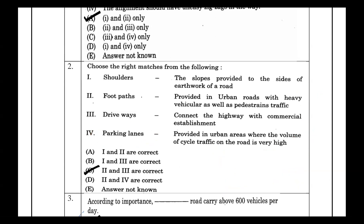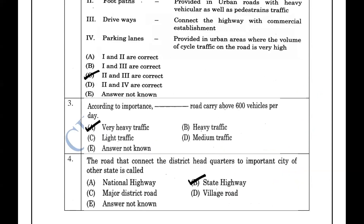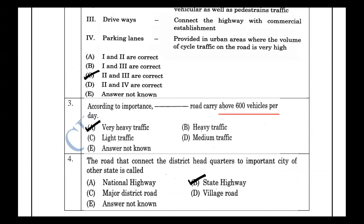According to road-carrying capacity, the classification is as follows: very heavy traffic is greater than 600 vehicles; heavy traffic is above that threshold; medium traffic is in the mid-range; and light traffic is the lowest category. Roads are classified on this basis within each state.